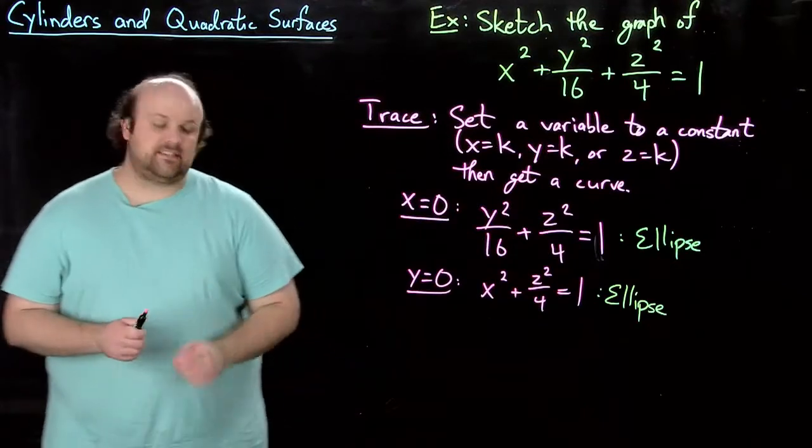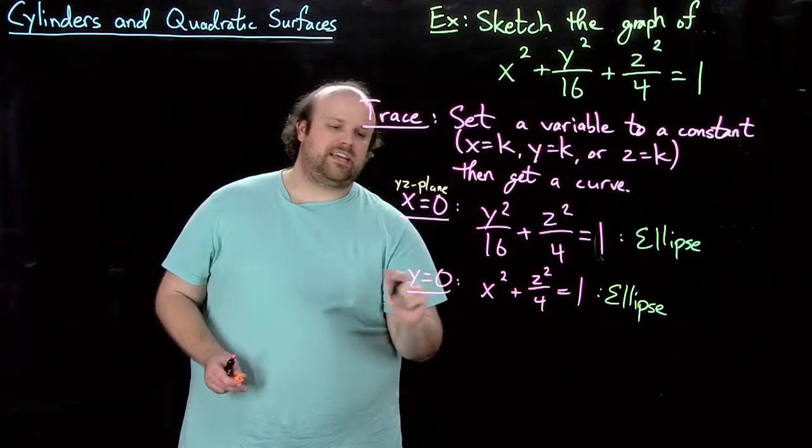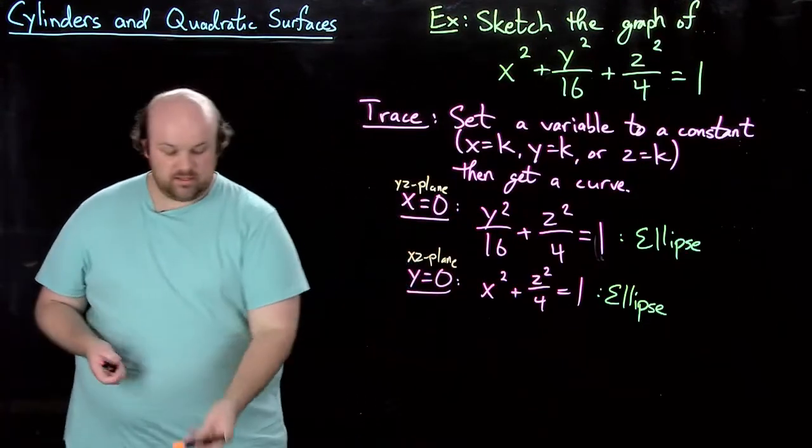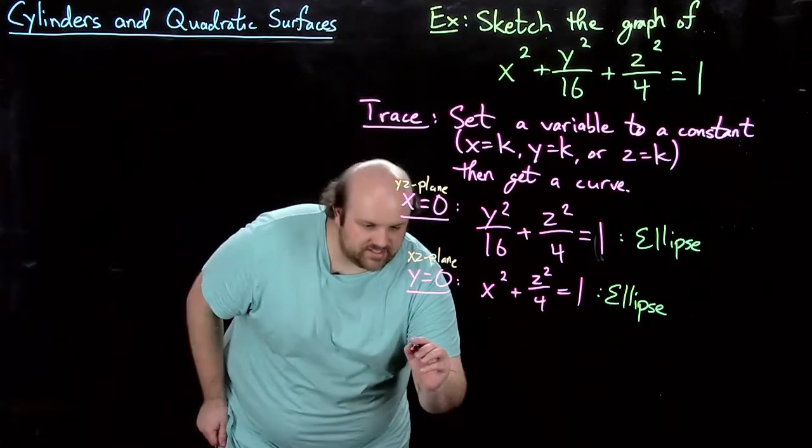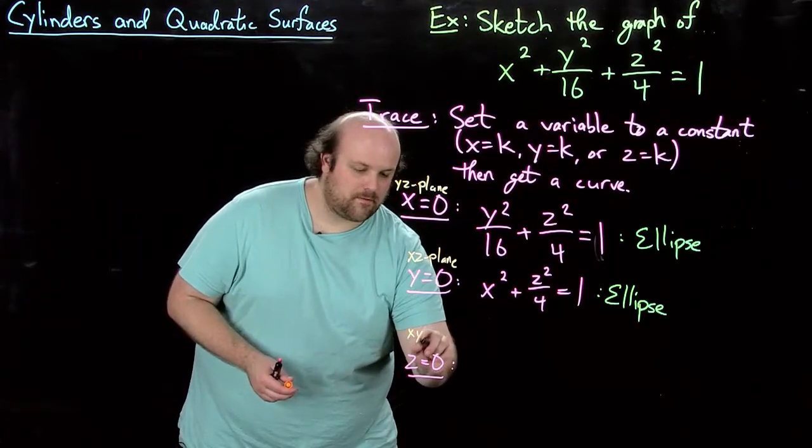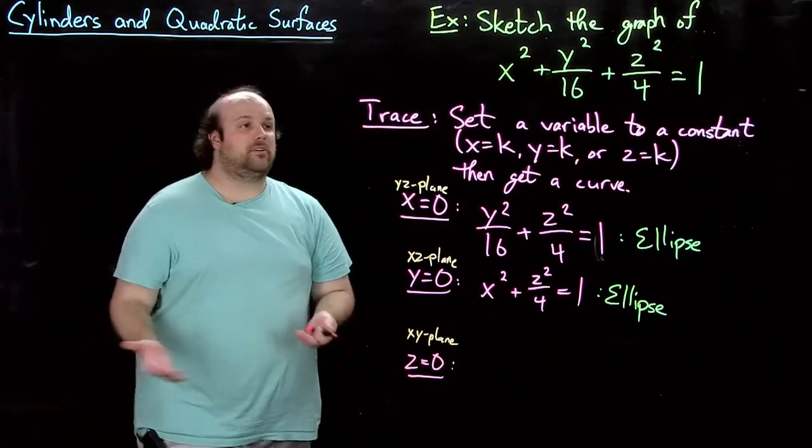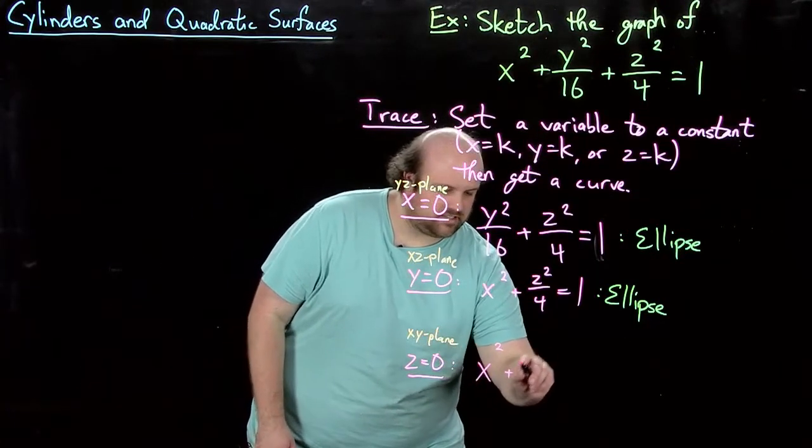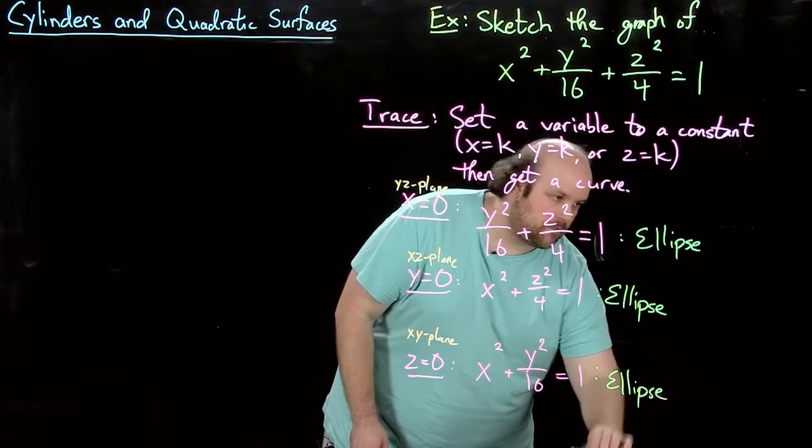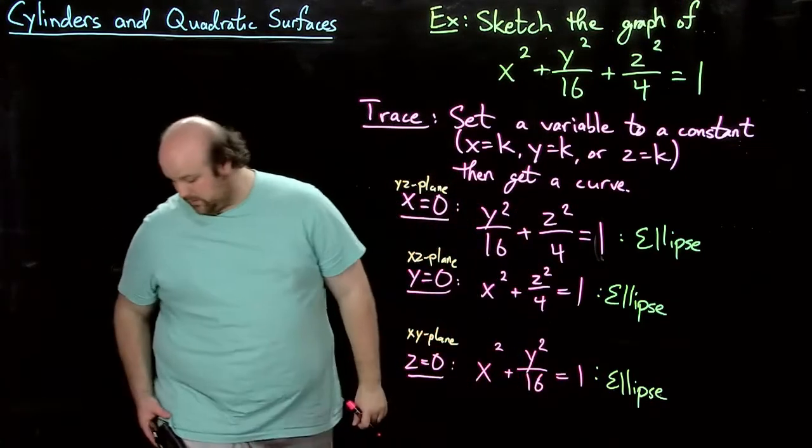And where does that ellipse lie? In fact, let's start writing this up here. So x equals 0, this is the yz plane. y equals 0, what is that? It's the xz plane. And then let's do sort of the logical next one, which is z equals 0. What plane is that? Of course, that's the xy plane. And what is the equation here? Well, it's x squared plus y squared over 16 equals 1. And of course, that's also an ellipse.